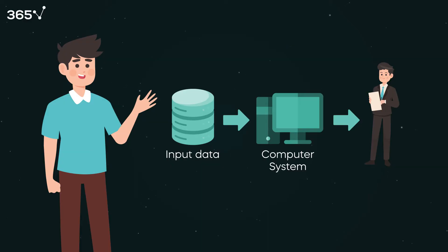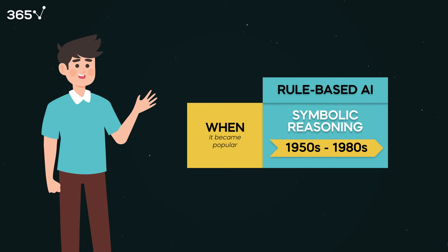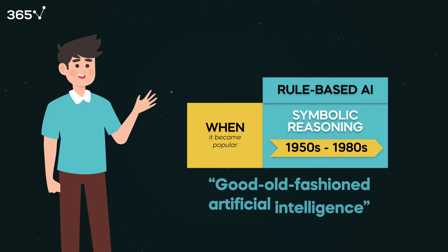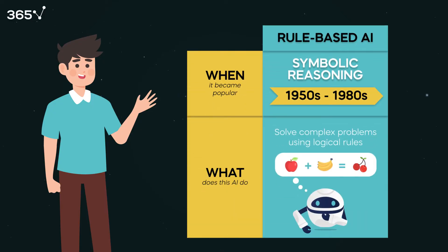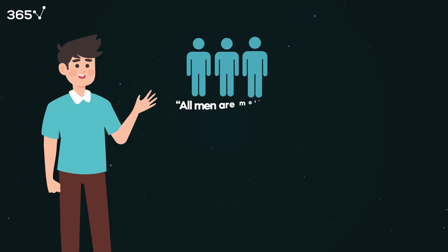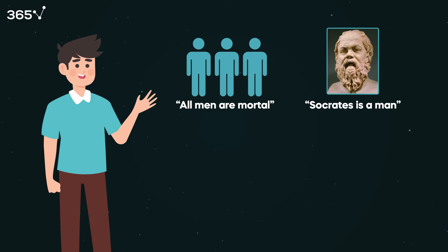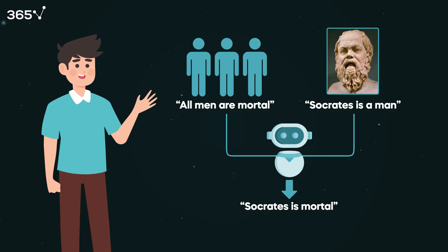There are several critical AI technologies you should know about. The first is symbolic reasoning, or symbolic AI, popular from the 1950s to the 80s — today frequently referred to as good old-fashioned artificial intelligence. It represents problems via symbols and then solves them by manipulating those symbols. For instance, given the facts that all men are mortal and Socrates is a man, a symbolic AI could deduce that Socrates is mortal — without any additional information about who Socrates was or what it means to be mortal or a man.